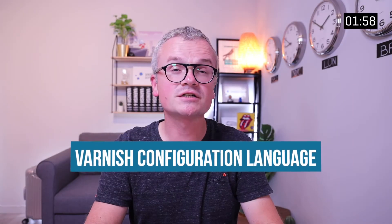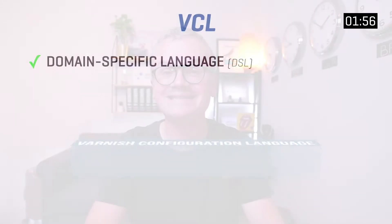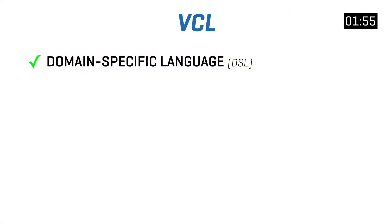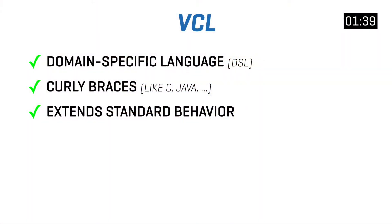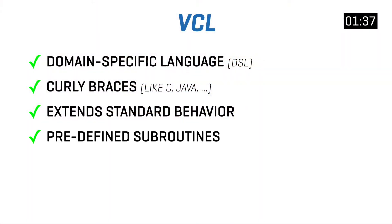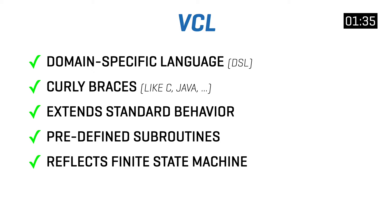VCL is short for Varnish Configuration Language and is in fact a DSL, a Domain Specific Language, meaning it can only be used within the context of Varnish. It is a curly braces style language, which makes it similar to languages like C and Java. But unlike these languages, VCL is not a top-down programming language. Instead, it extends standard behavior to a predefined set of subroutines, and these subroutines reflect the flow of the built-in finite state machine of Varnish.